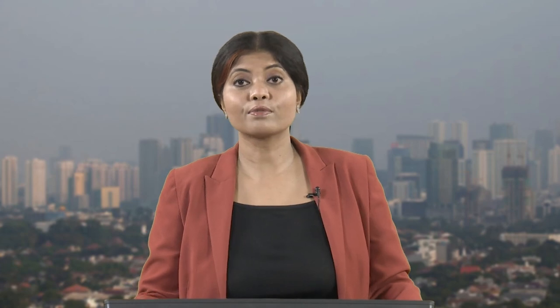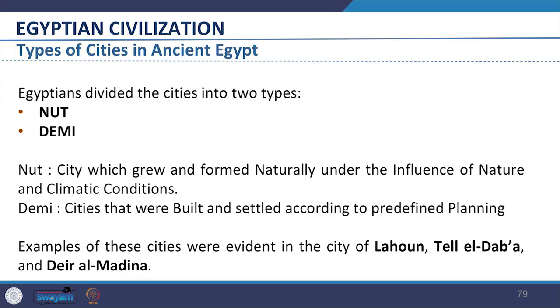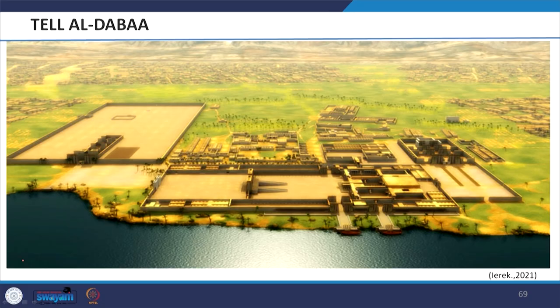The ancient Egyptians divided cities into two types: the first type they called Nut, and the second type they called Demai. Nut refers to the city which grew and formed naturally under the influence of nature and climatic conditions. Demai refers to cities that were built and settled according to predefined planning; examples of these cities were evident in the city of Lahun, Tal El-Daba, and Deir El-Medina.